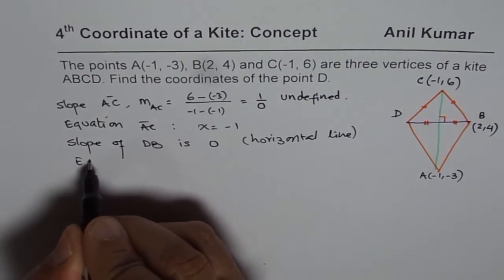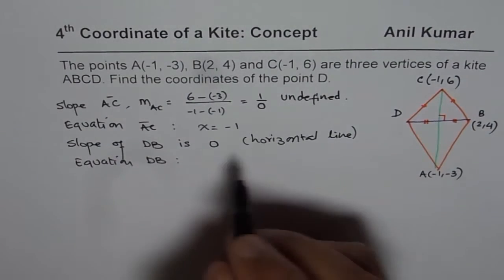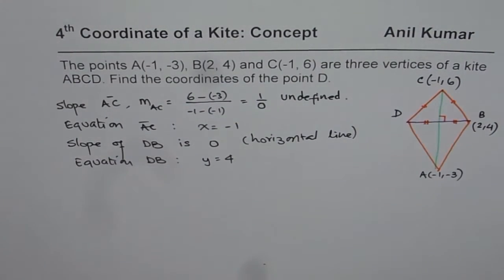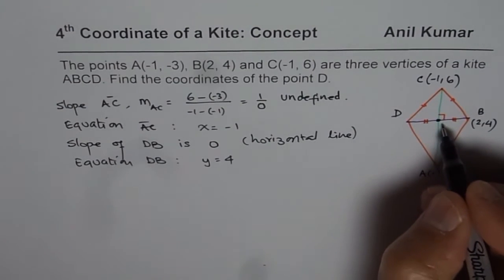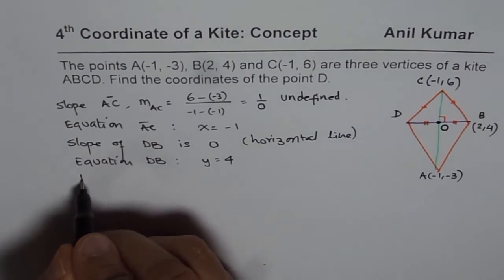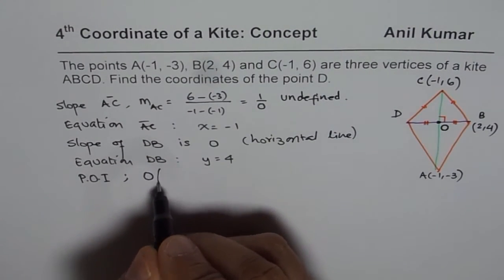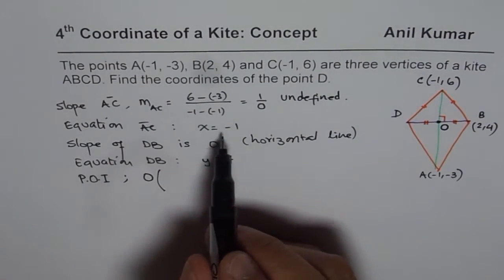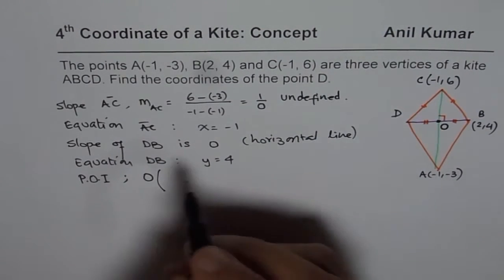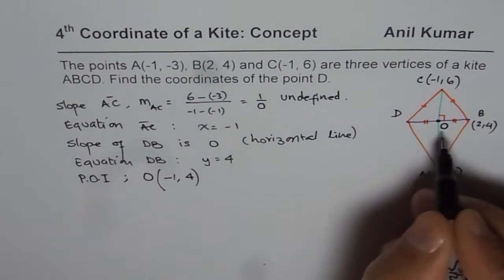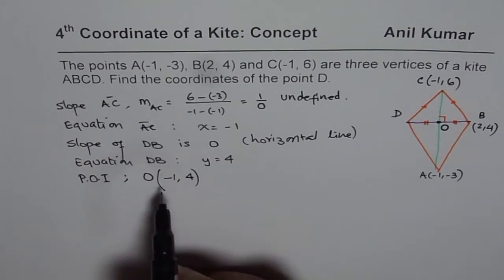Equation of line DB will be y = 4. Now from these two lines we can find their point of intersection, and let's say the point of intersection is O. So the point of intersection O, if the lines are x = -1 and y = 4, then the x-value will be -1 and the y-value will be 4 for this point O.